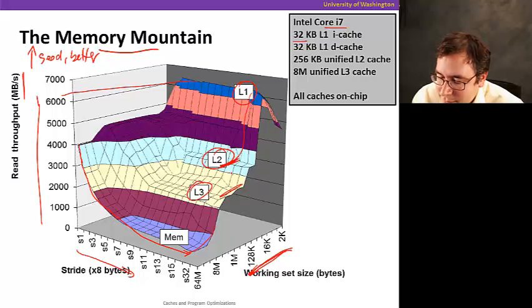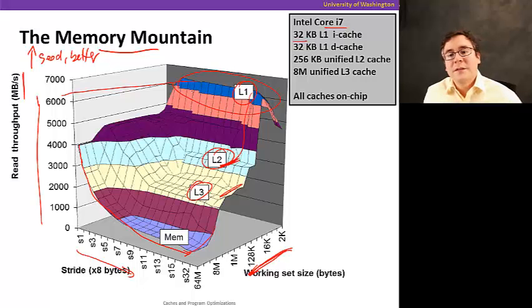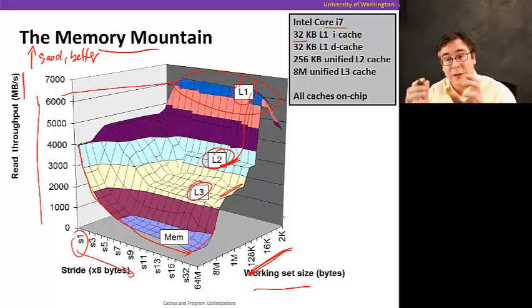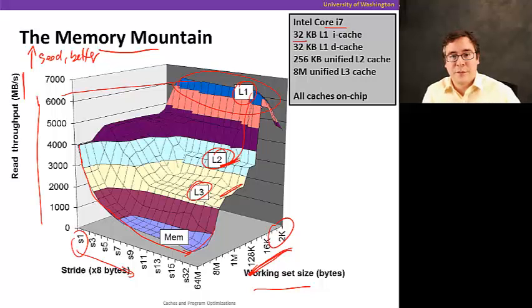If you keep the working set size small, there's a much higher chance it stays within L1 or L2 cache, which is good. Take advantage of spatial locality by keeping the stride low, and use blocking to focus the working set size for parts of your code. If you keep it small, you get very high throughput, which has a huge impact on performance. This concludes our memory and caches section — see you soon.